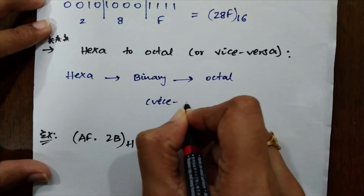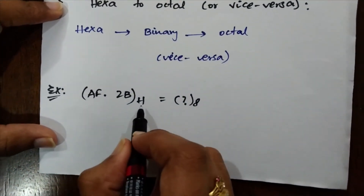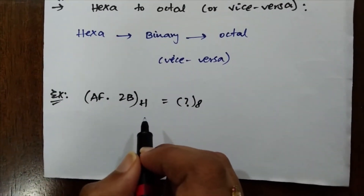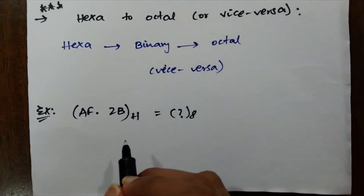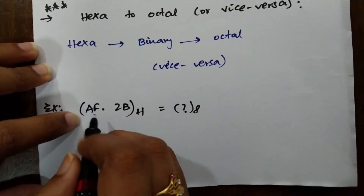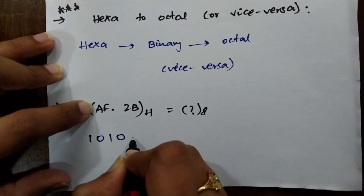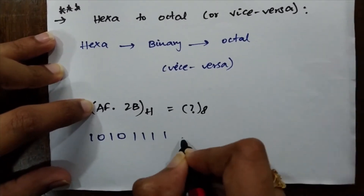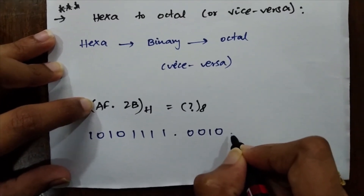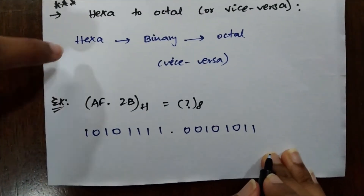Let's work through an example: AF.2B in hexadecimal. Note that 'H' also stands for hexadecimal — don't get confused if an exam uses H or base 16. Now: A is represented as 1010, F is represented as 1111, dot, 2 is represented as 0010, and B which is 11 is represented as 1011. The first part — converting hex to binary — is now complete.